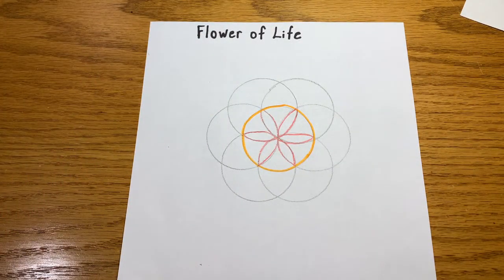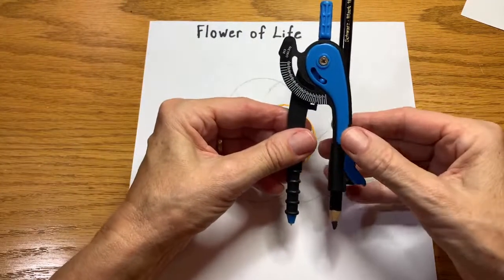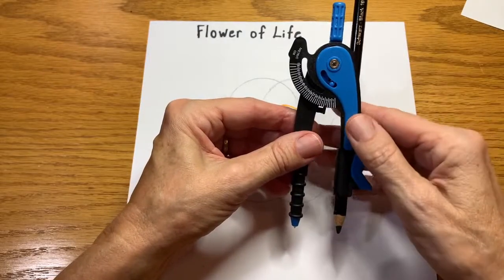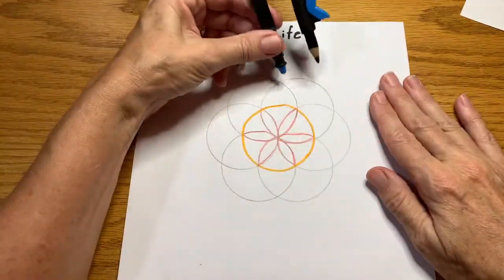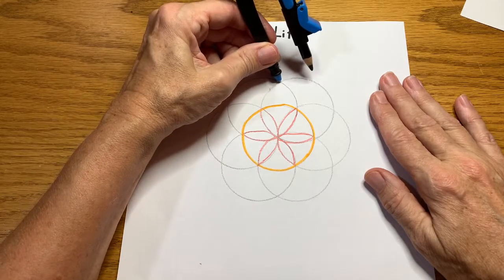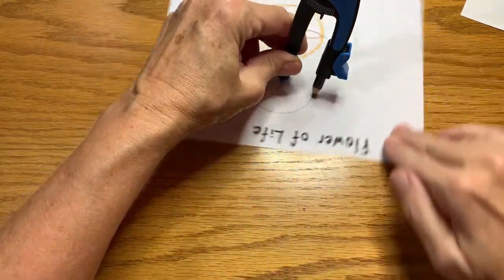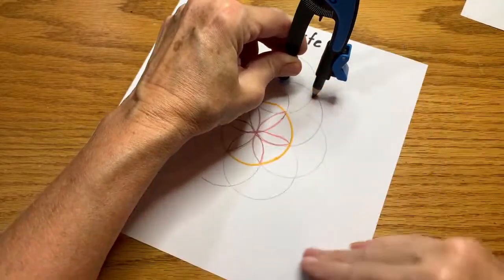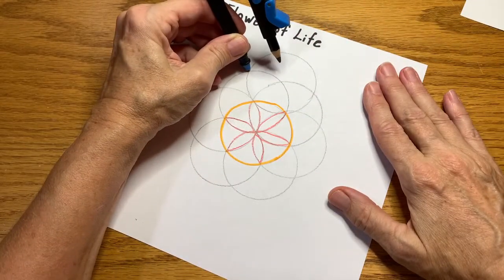All right. So that's our first iteration. We now take our compass, making sure that it hasn't moved. That's really important. And we're going to go out here to where all of these connect. So anytime circumferences of a circle connect, you put your compass and you make another circle.